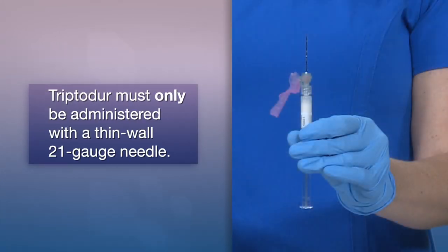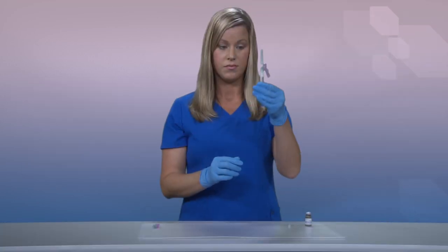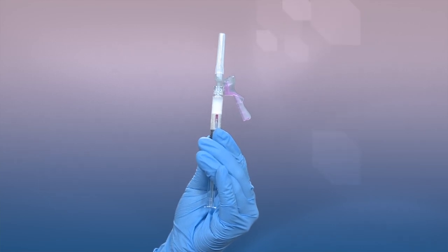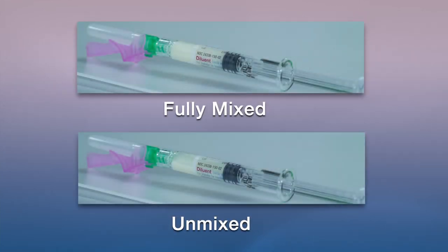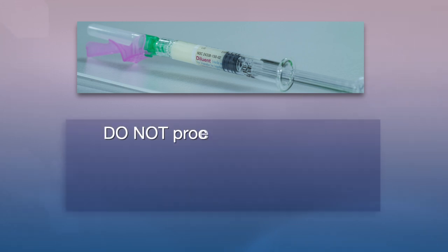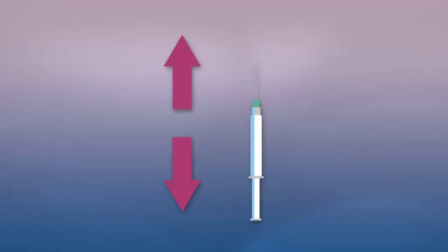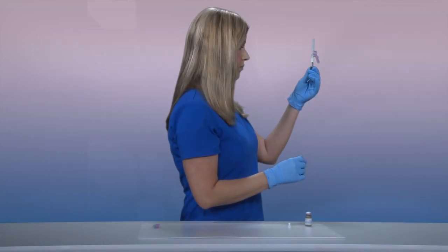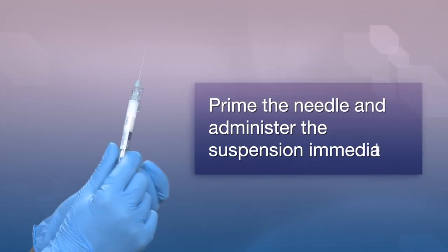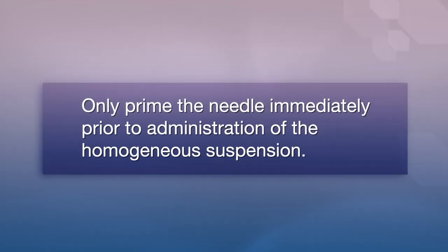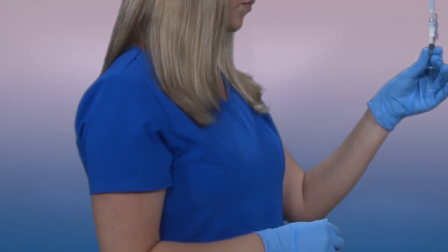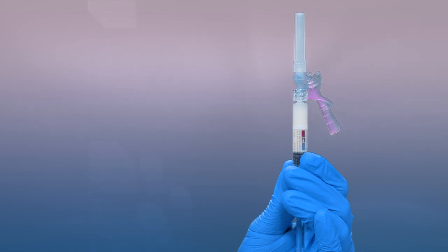Tryptidor must only be administered with a thin-wall 21-gauge needle. Inspect the suspension visually for particulate matter and discoloration. The suspension should appear milky and homogeneous without visible aggregates or precipitates. Do not prime the needle if the suspension does not appear milky and homogeneous; continue with an up and down agitation. If the suspension appears milky and homogeneous without visible aggregates or precipitates, prime the needle and administer the suspension immediately. Only prime the needle immediately prior to administration of the homogeneous suspension. Inject the patient intramuscularly with the milky and homogeneous suspension, preferably in either the buttock or thigh, using the entire contents of the syringe.